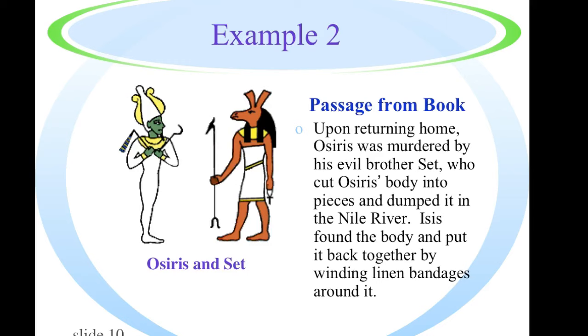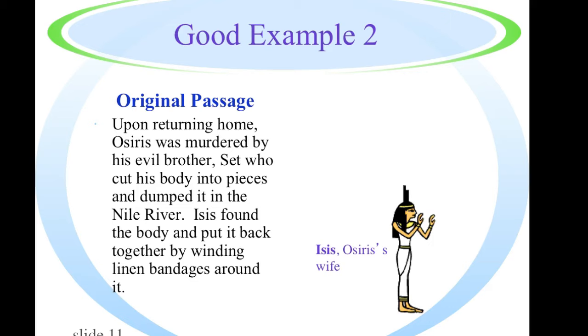Let's take a look at another example. Upon returning home, Osiris was murdered by his evil brother Set, who cut Osiris's body into pieces and dumped it in the Nile River. Isis found the body and put it back together by winding linen bandages around it. Now, again, think about what the key words would be that you would highlight in this particular paragraph. Pick them out.